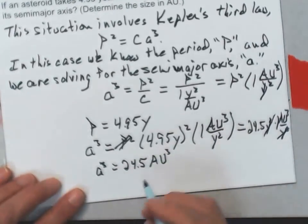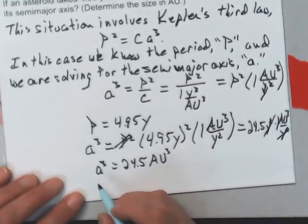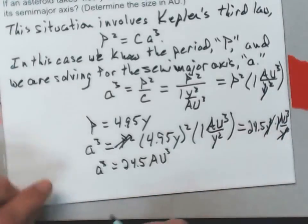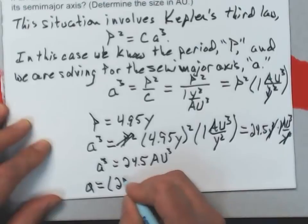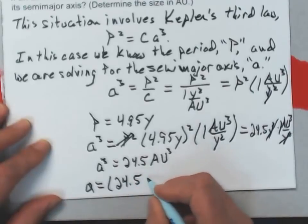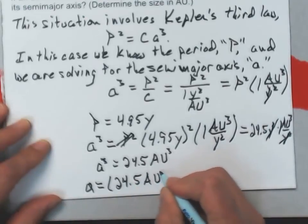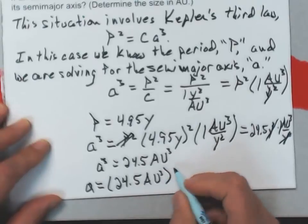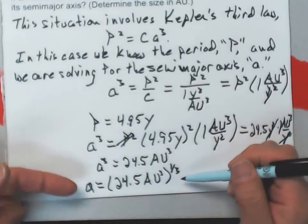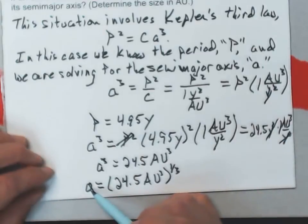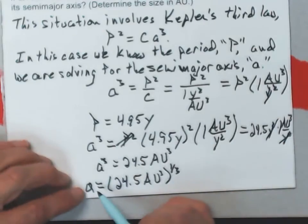To figure out A, I need to take the cube root of both sides, or with a little bit of algebraic cleverness, A is going to equal 24.5 AU cubed to the 1/3. If I take both sides to the 1/3, I'll get an A here. A cubed to the 1/3 is just A.